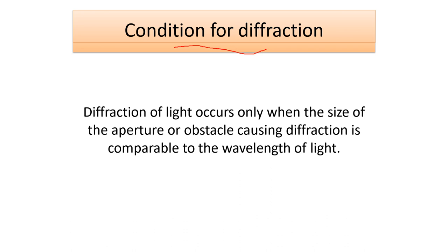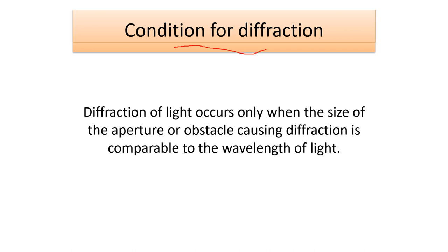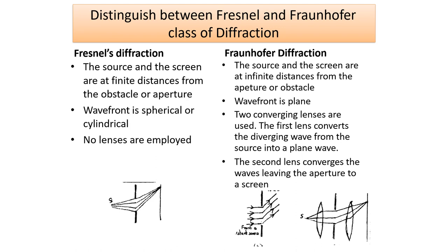This phenomena of bending of light rays over the corners of tiny obstacles and the consequent encroachment of light into the geometrical shadow region is known as diffraction. Diffraction of light occurs only when the size of the aperture or obstacle is comparable to the wavelength of light incident on it. The diffraction phenomena are usually divided into two categories: Fresnel diffraction and Fraunhofer diffraction.